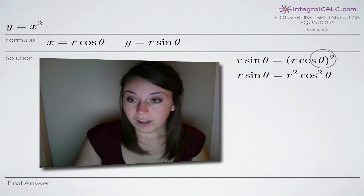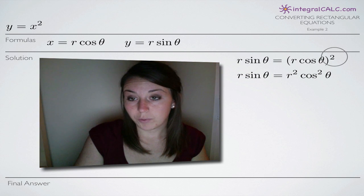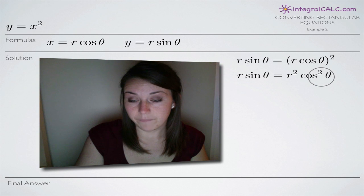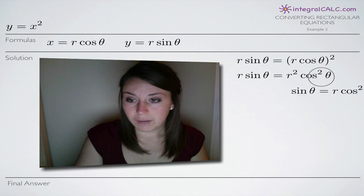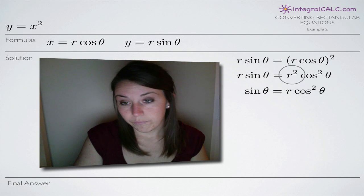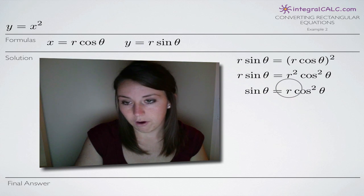So in order to simplify, we'll first distribute this squared exponent here. So we'll end up with r squared times cosine squared of theta. Then we'll divide both sides by r so that the r on the left hand side cancels and this r squared here on the right hand side just becomes r.